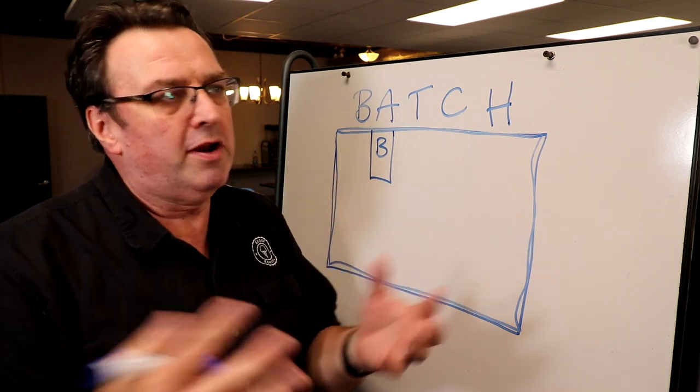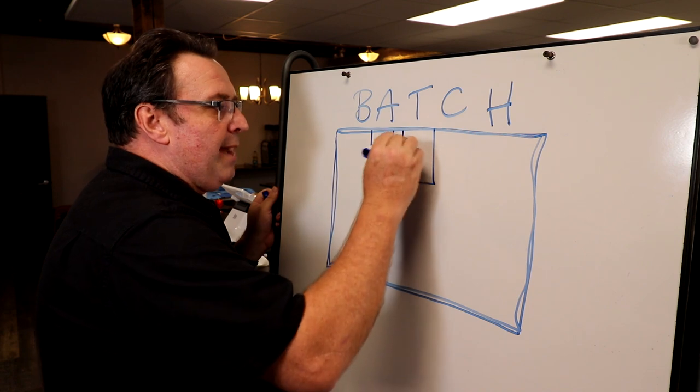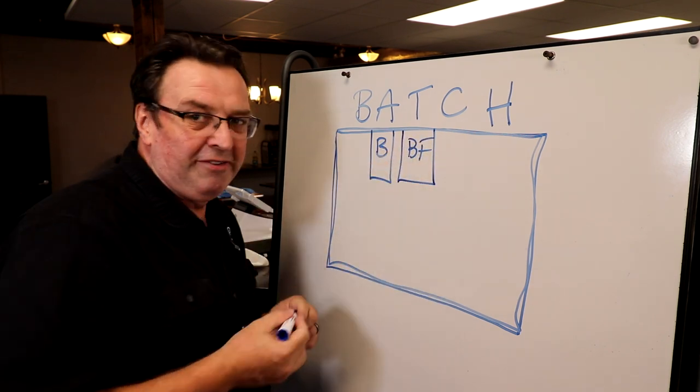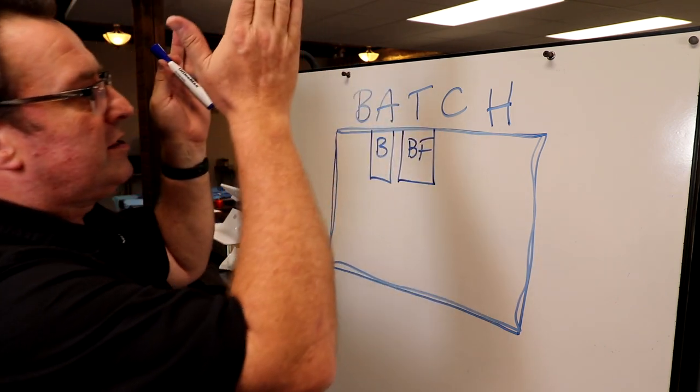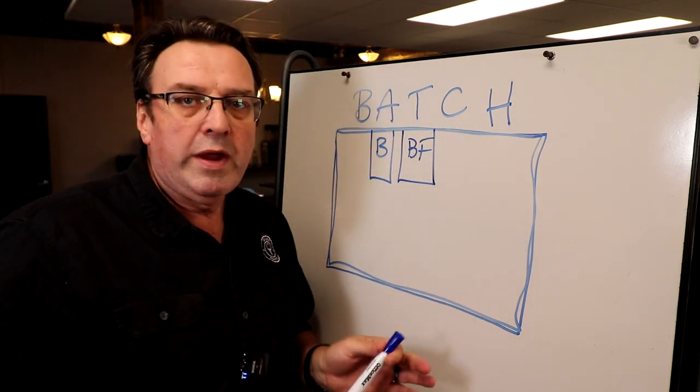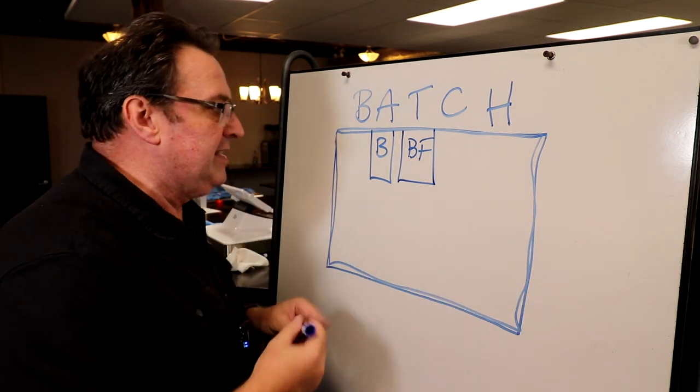Secondly, you might have a blast freezer or a hardening cabinet. Let's call it a BF. Typically, they're close together. Here with our production facility, we have batch freezers and then at the end of the row we have our blast freezer. So it's a nice easy transition from here to here.